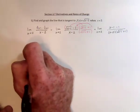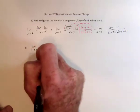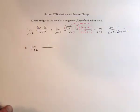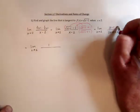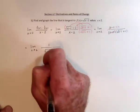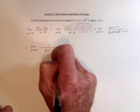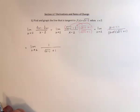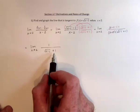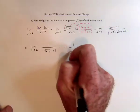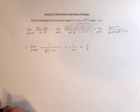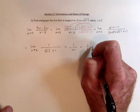When we cancel, we're left with a 1 on top — we cancel all of this with all of this. What's left is the square root of x minus 1, plus 1 in the denominator. Now substituting a 2, this becomes the square root of 1 plus another 1, giving us 1 over 2. So the slope is 1 half, and this is the slope of the tangent line.